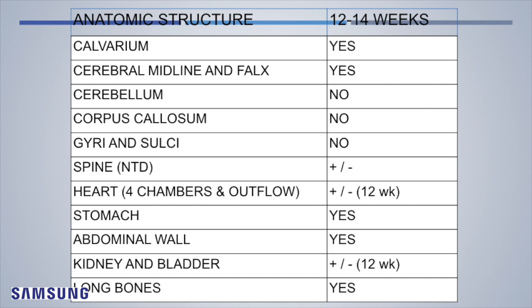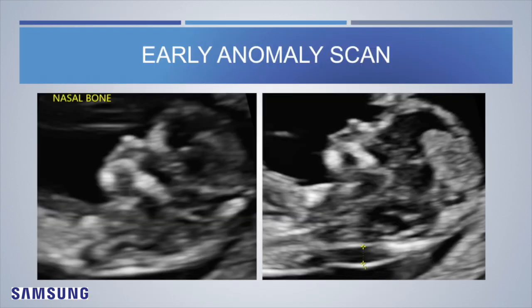The stomach is always seen between 12 to 14 weeks. The abdominal wall is always intact between 12 to 14 weeks. Kidneys and bladder are again plus or minus — kidneys become difficult to visualize transabdominally, but the bladder is most of the time seen beyond 12 weeks and is visible in nearly all anomaly scans done between 12 to 14 weeks. Long bones are all seen — in fact all four limbs and all three segments of the limbs can be seen between 12 to 14 weeks, giving a good image.